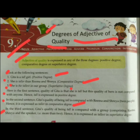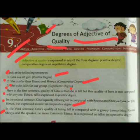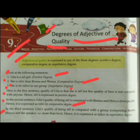Adjective of quality को तीन degrees में से किसी एक degree में व्यक्त किया जाता है: positive degree, comparative degree, और superlative degree। जब किसी के गुण की तुलना किसी से नहीं की जाती — positive degree होगा। जब किसी के गुण की तुलना किसी एक या दो लोगों से की जाती है — comparative degree होगा। जब किसी के गुण की तुलना दो से अधिक लोगों या group के साथ की जाती है — superlative degree होगा।